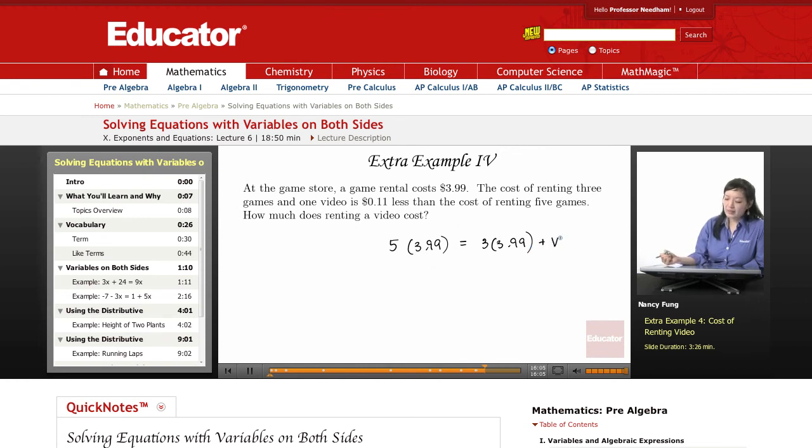That would be 11 cents less than the cost of renting five, so I'm going to add the 11 cents. Remember, since we're setting up the equation, we need both sides to be equal. The difference between the prices is 11 cents - the video rental and three games is 11 cents less. So if I add the 11 cents, then they can both be equal on both sides.